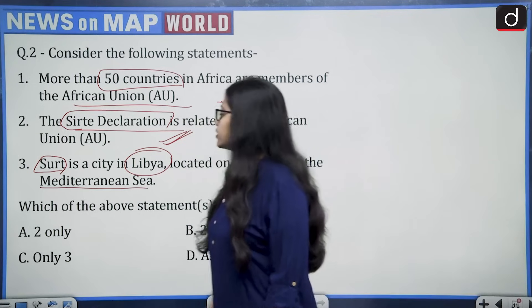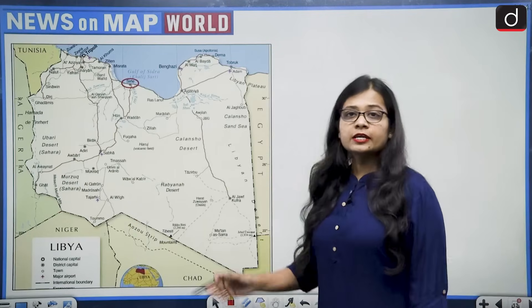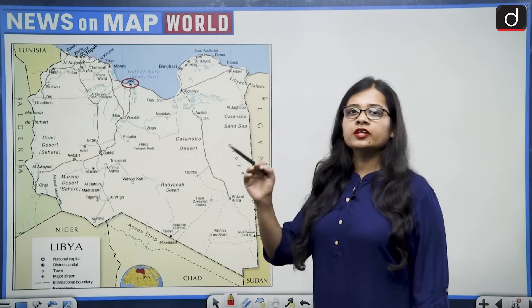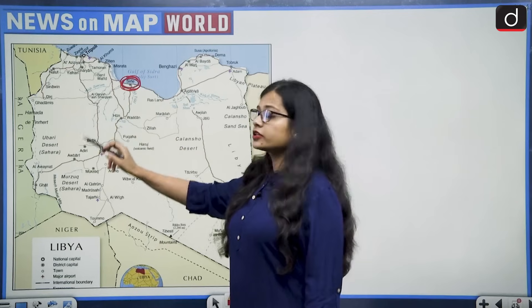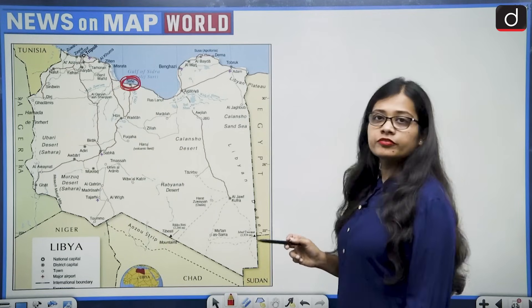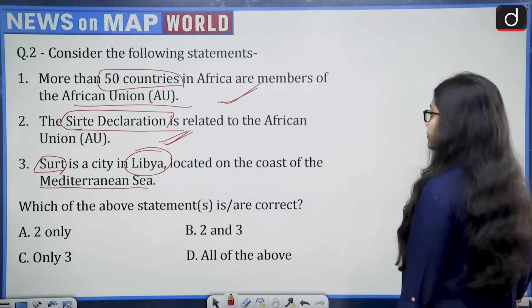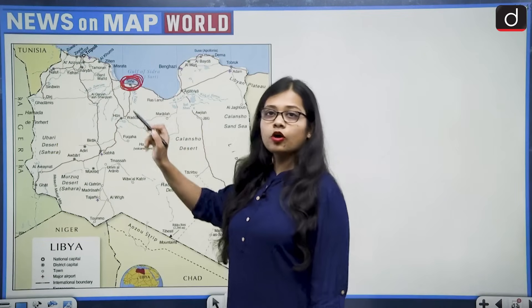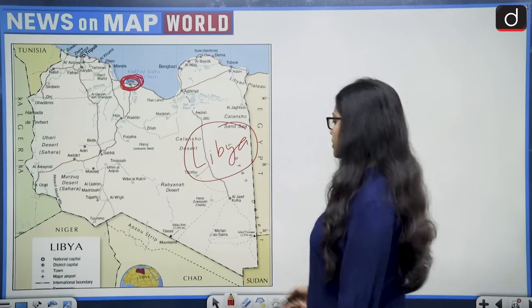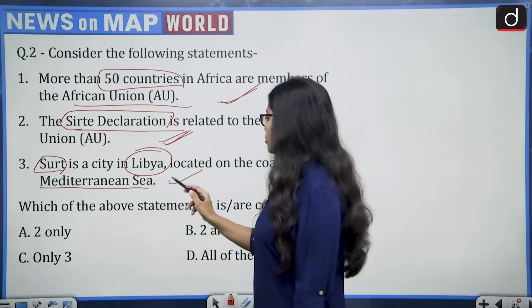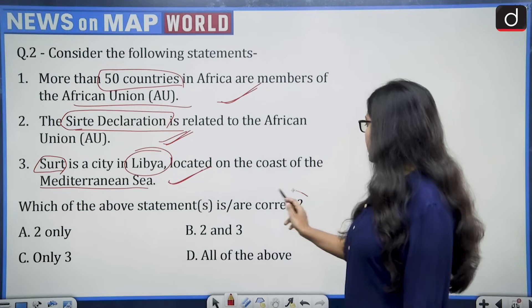Third statement says Sirte is a city in Libya located on the coast of the Mediterranean Sea. Libya is a country in North Africa and is one of the northernmost countries of Africa. It also has regions in the Sahara Desert. Sirte is a city lying in the north of Libya, which shares a border with the Mediterranean Sea — so this becomes correct. All three statements are correct, so the correct answer is option D, all of the above.